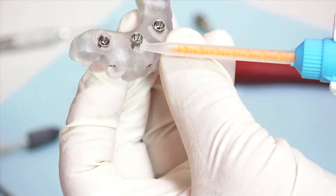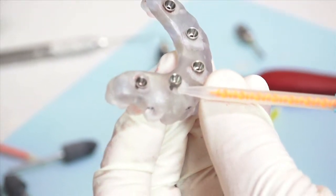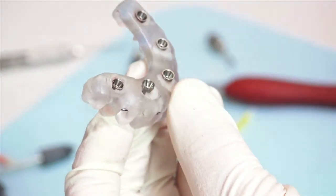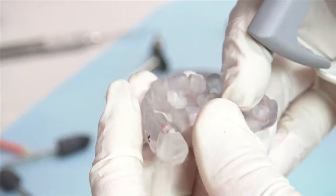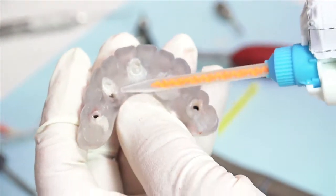Evaluate both the tissue side and the occlusal side of the clear duplicate bridge and fill in any voids as needed to help secure the temporary cylinders to the clear duplicate bridge.